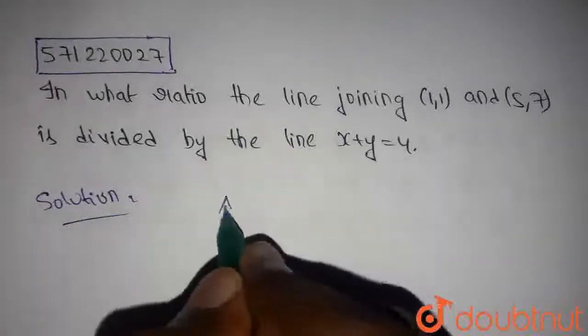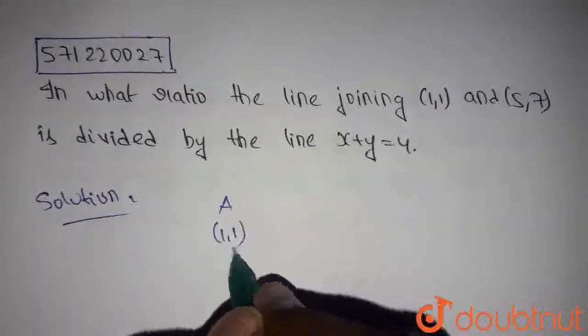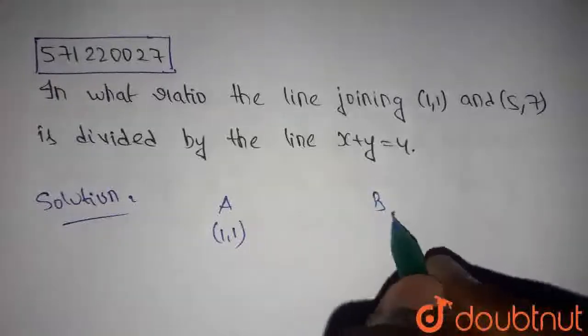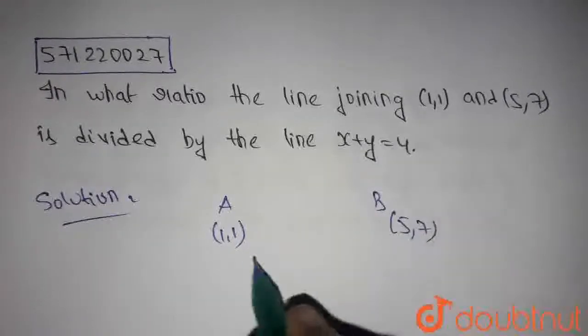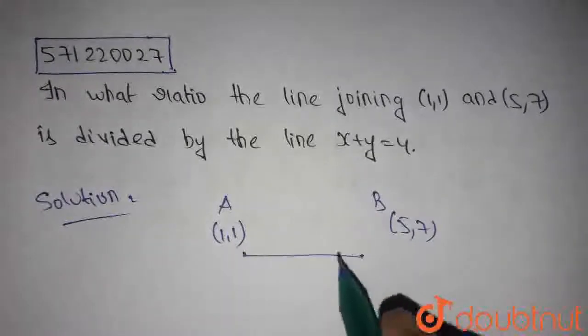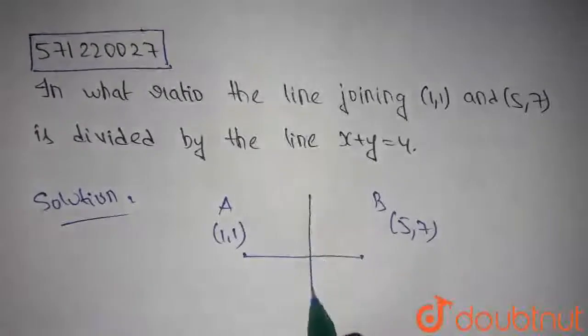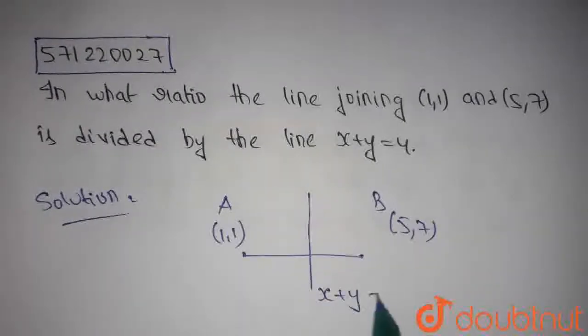Let's consider point A as (1,1) and point B as (5,7). This is point A and this is point B, and let's say this is the line x plus y equals 4.